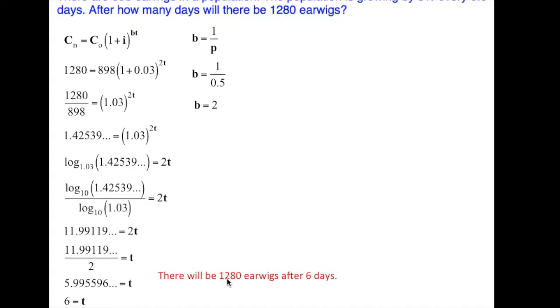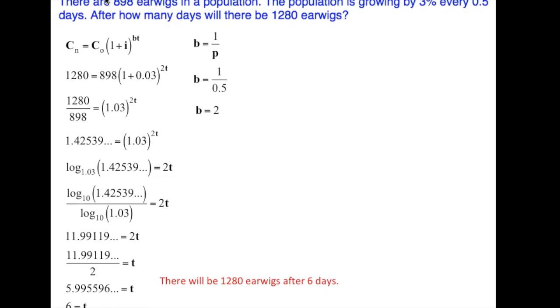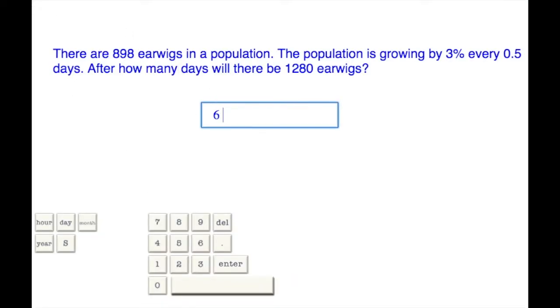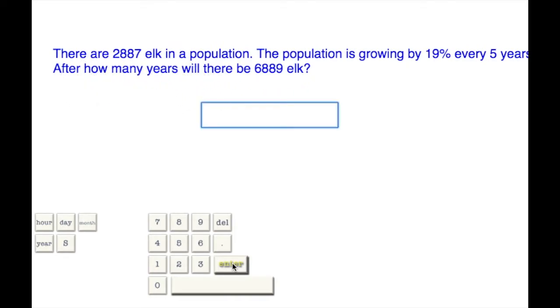There will be 1,280 earwigs after 6 days. Let us bring that answer into the program. So 6 days, 6, and you have to put the units. Down here, we can hit day, and then you can hit yes to make it plural, days, and enter. There we go. And that is it for level number 9. Have a good day.